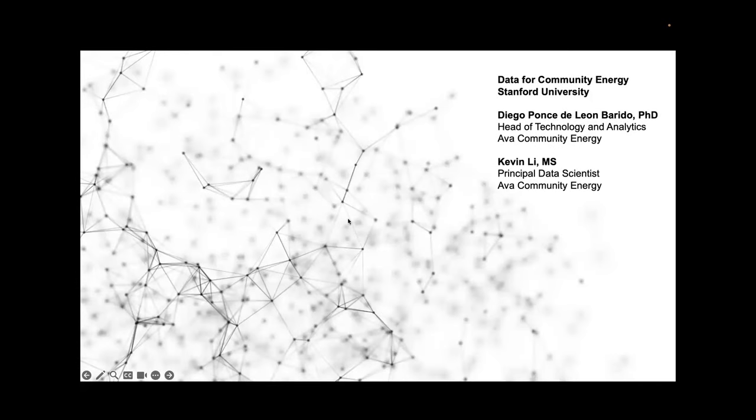Okay, hello everyone. Pleasure to be here with all of you today. I'm Diego Ponce de Leon, I'm the head of technology at AVA Community Energy. And with me is Kevin Lee, my colleague, principal data scientist at AVA, working on machine learning and artificial intelligence.